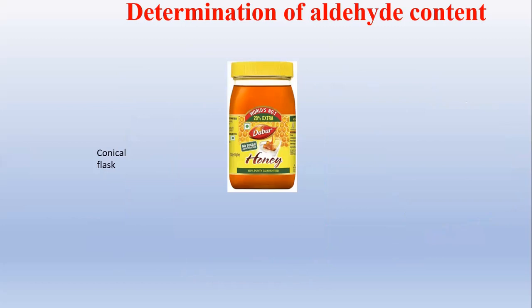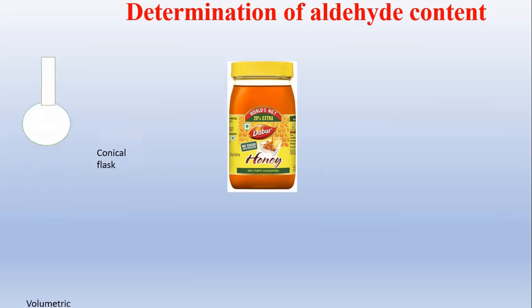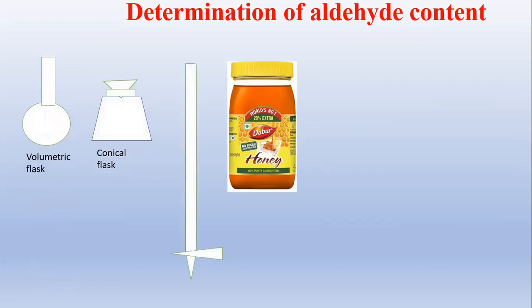In this case we are going to take one of the important samples, that is honey. For this experiment we require a volumetric flask, then a conical flask, then a burette, and ready-made honey which should be available. Honey is obtained from the nectar of the flowers, whereas the honey bees collect that honey from different types of flowers.